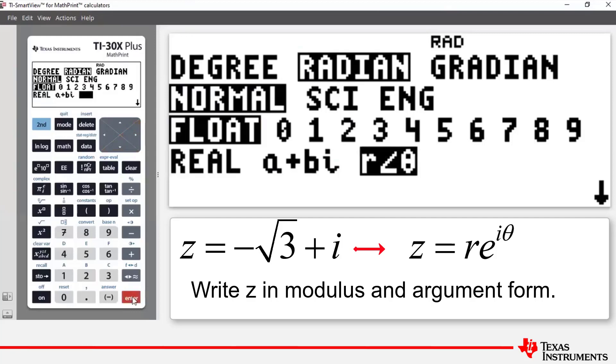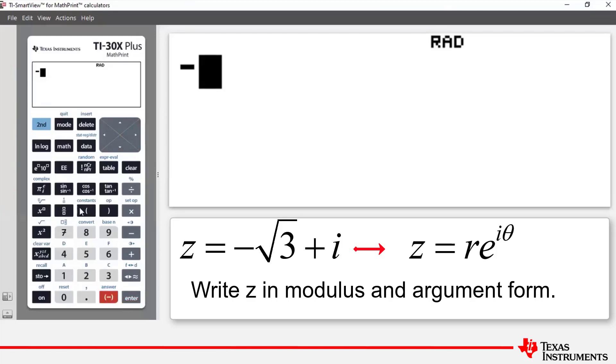And now what we're going to do is we're going to enter the complex number z and press enter and the conversion will happen automatically for us. So we press the negation key. Notice we're back on the home screen.